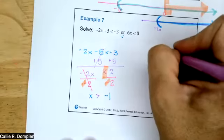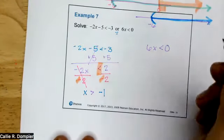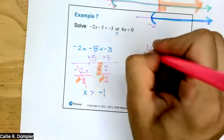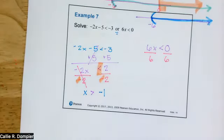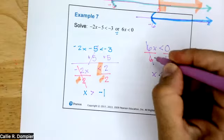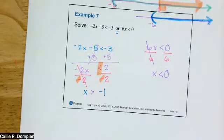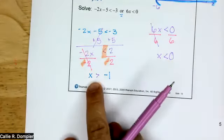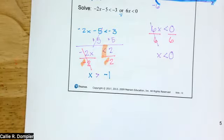Then we just have 6x is less than zero. It's not a trick question — just divide by six. Treat zero as though it's any other number. Zero divided by six is still zero. You do not change the sign because it wasn't a negative six. So now we have x is greater than negative one, or x is less than zero.